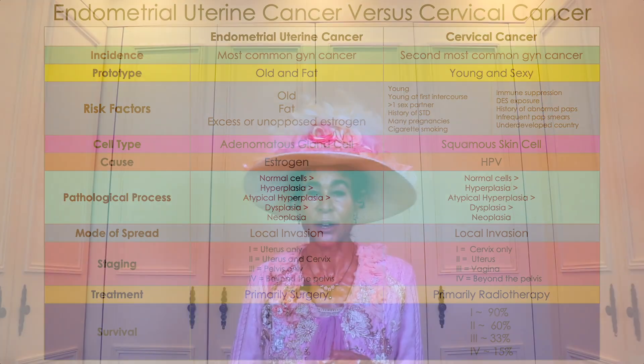Next on our chart is cause, and it's simple: estrogen causes endometrial uterine cancer, while HPV causes cervical cancer. One is caused by a hormone and the other is caused by a virus. Big difference.